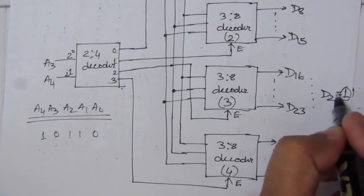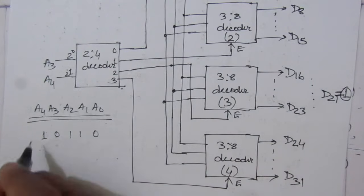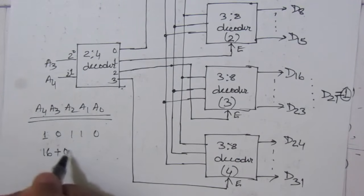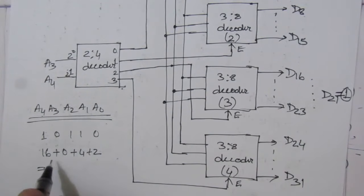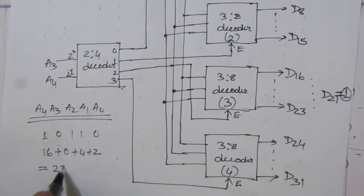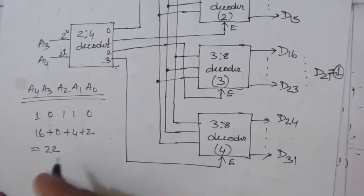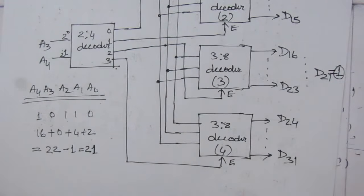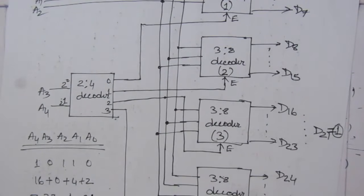D21 will have a value of 1 for this input. Let us verify: the decoder 3 group starts at 16; 16 + 4 + 2 = 22, and since we count from 0, output port 22 − 1 = 21 is selected. This is the block diagram of a 5-to-32 line decoder. Thank you for watching — please put any questions in the comment section below, and like, share, and subscribe to the channel.